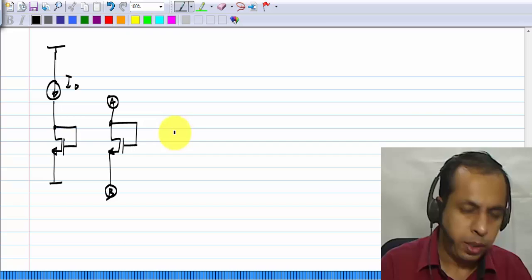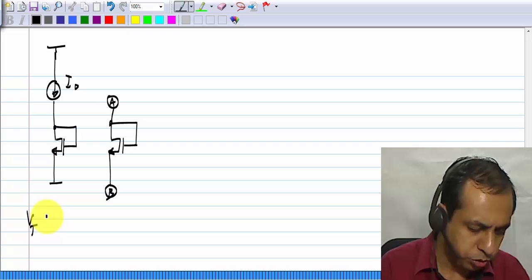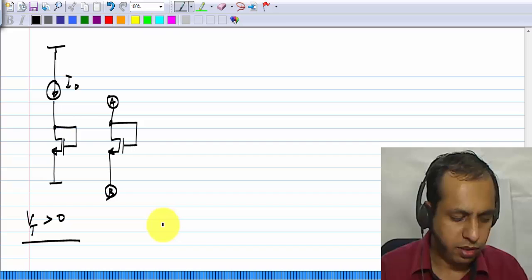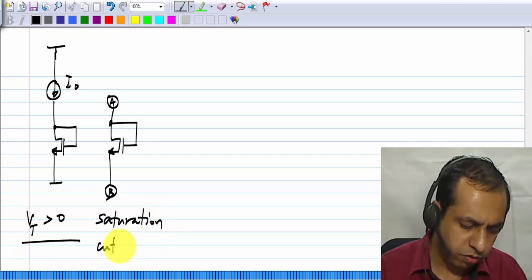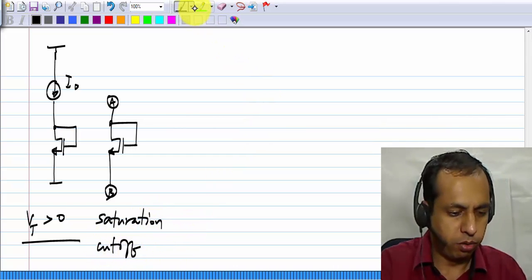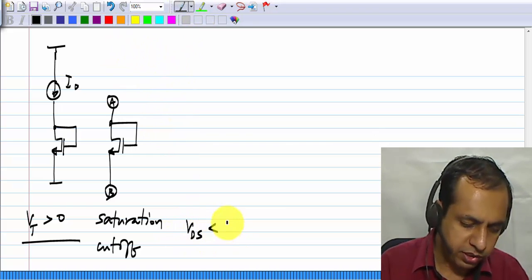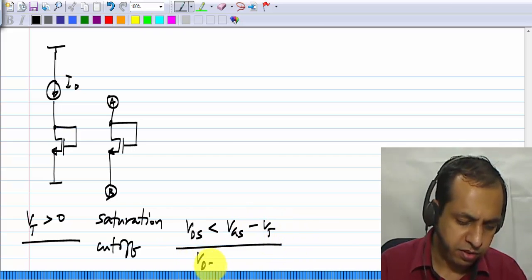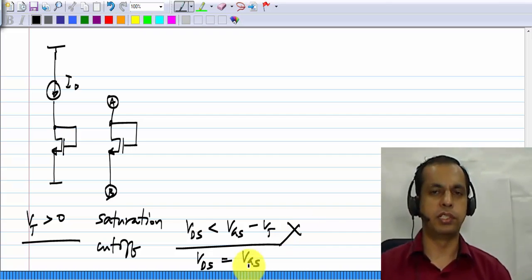If we think of this as a two terminal element, and let us also make our usual assumption that the threshold voltage is positive, this structure will be either in saturation or cut off completely. It cannot be in triode region, because if it has to be in the triode or linear region, V d s has to be less than V g s minus V t, but we have V d s equals V g s. So, this is not possible for positive threshold voltages V t.